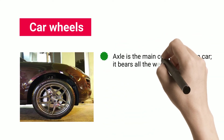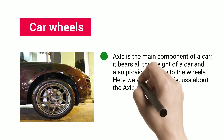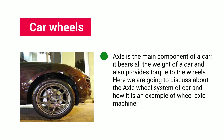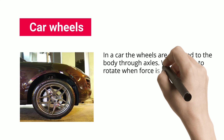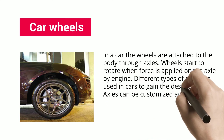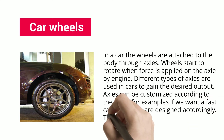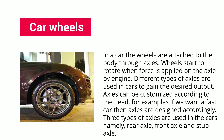Car Wheels. The axle is the main component of a car — it bears all the weight of a car and also provides torque to the wheels. In a car, the wheels are attached to the body through axles. Wheels start to rotate when force is applied on the axle by the engine. Different types of axles are used in cars to gain the desired output. Axles can be customized according to need; for example, if we want a fast car, axles are designed accordingly. Three types of axles are used in cars: rear axle, front axle, and stub axle.